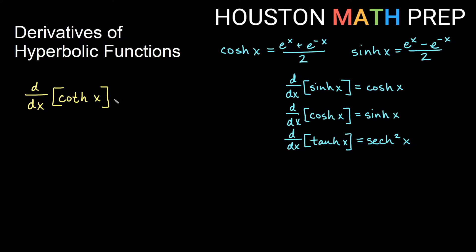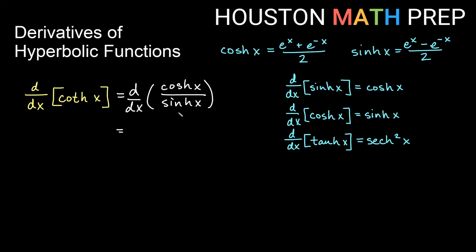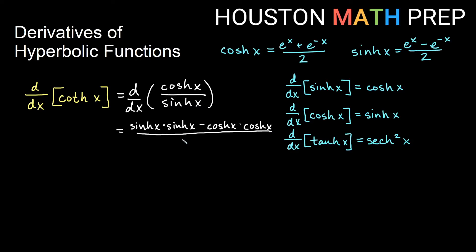We'll do the hyperbolic cotangent. Again, I'm going to think of this as a quotient — the derivative of cosh x over sinh x. It will work out very much the same way with the quotient rule. So the low function times the derivative of the high function, which is sinh, gives two copies of sinh; minus the high function cosh x, times the derivative of the low function, which gives another cosh x. All over the square of what lies below gives us sinh squared x on the bottom.